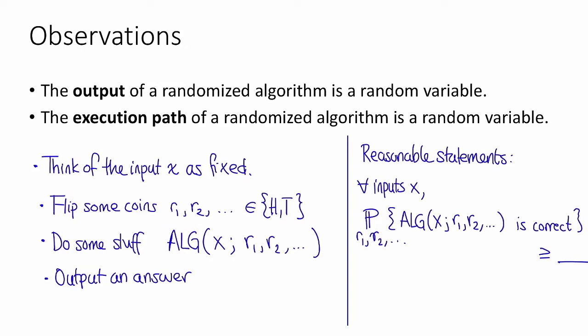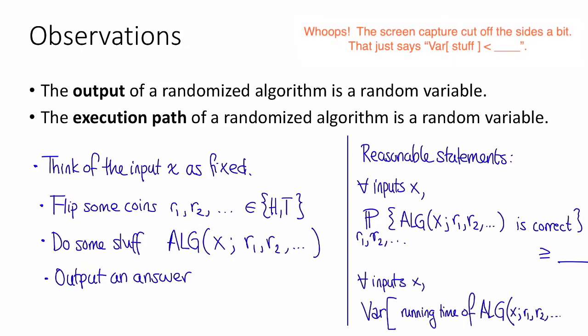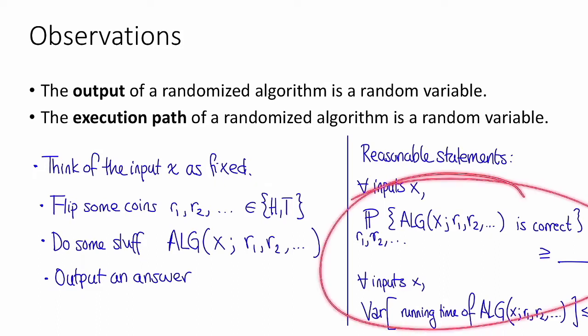Another reasonable statement for us to make is that for all inputs x, the variance of the running time of the algorithm is not too large. So once again this running time is a random variable because it depends on these r_i's, and so it makes sense to talk about its variance, and it makes sense to say that that should be small for all inputs x. So these are of course not the only reasonable statements that we could make about a randomized algorithm, I just want to give you some examples of the sorts of statements that make sense to make and that we might be making.